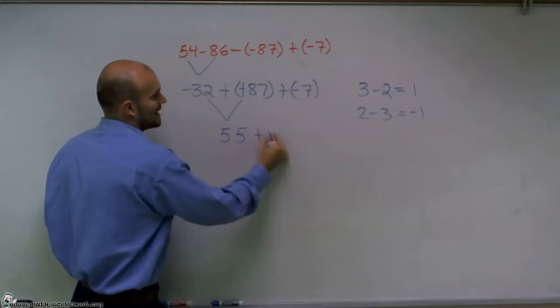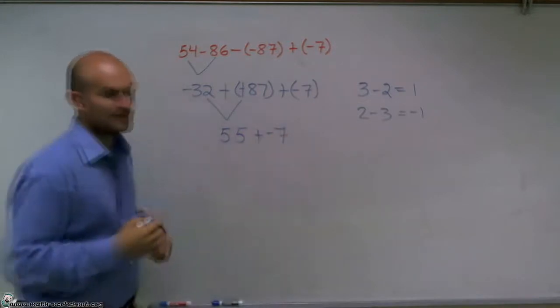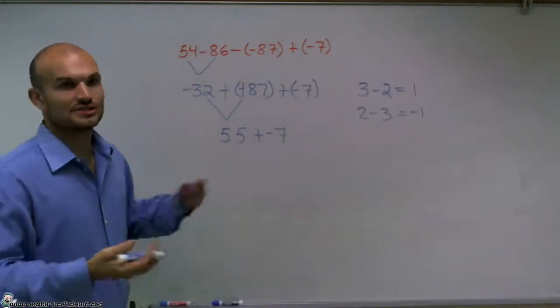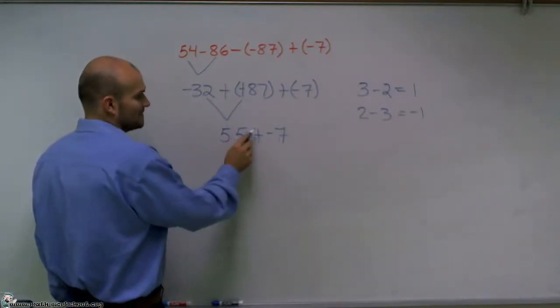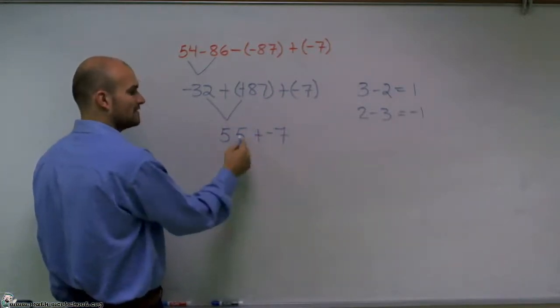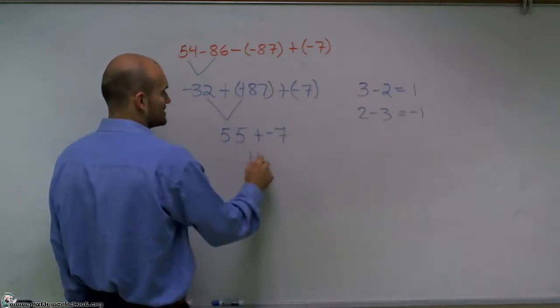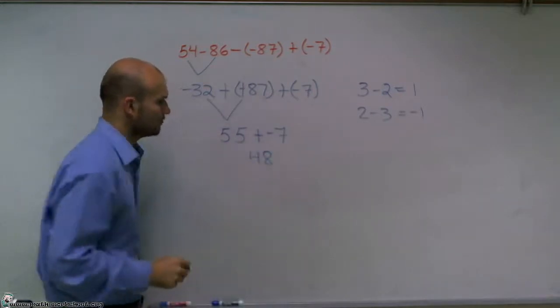Now, I'm going to add a negative 7. And adding a negative 7 is just equivalent to subtracting a positive 7. So 55 plus negative 7 or 55 minus 7 is going to give us a positive 48.